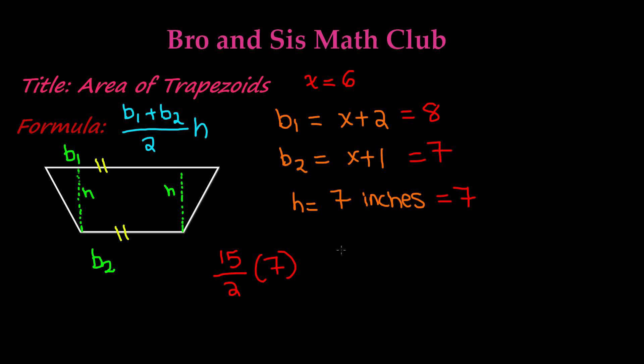15 divided by 2 is 7.5 times 7, which gives us, if you go ahead and do the multiplication, 7 times 5 is 35, carry the 3, 7 times 7 is 49, plus the 3 is 52, add the decimal point, and our area of this trapezoid is 52.5 inches squared.